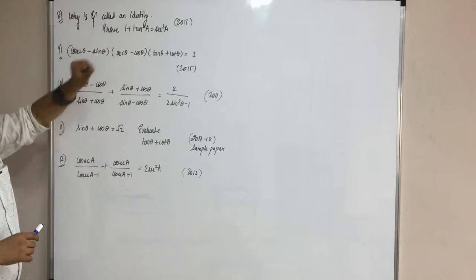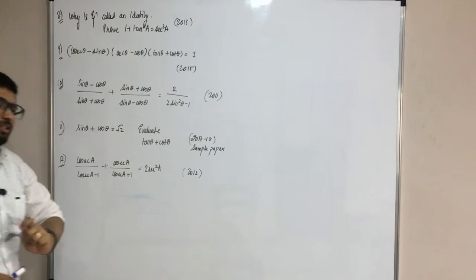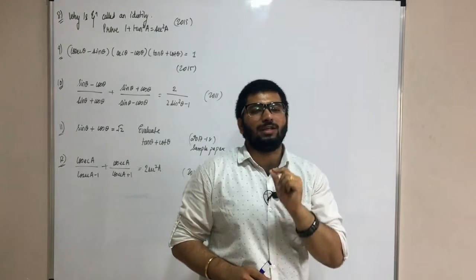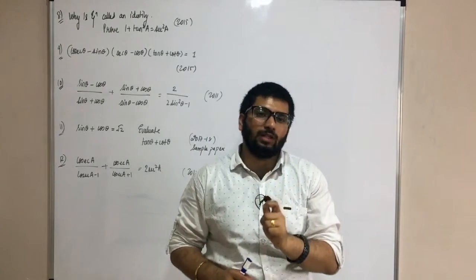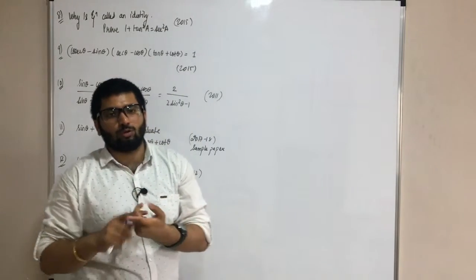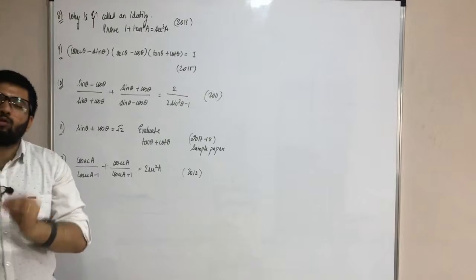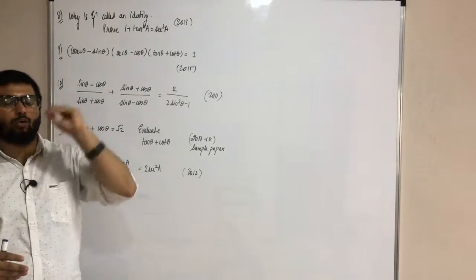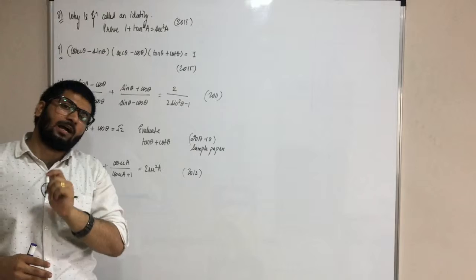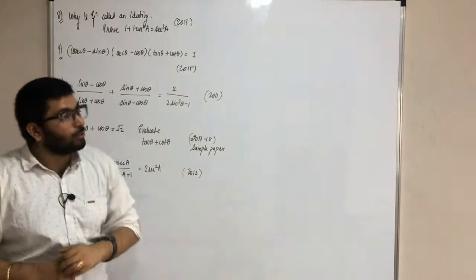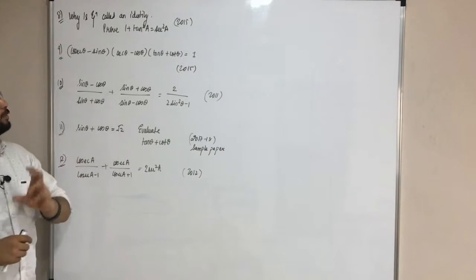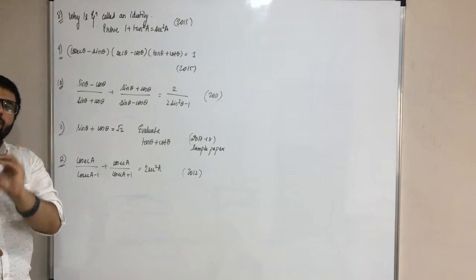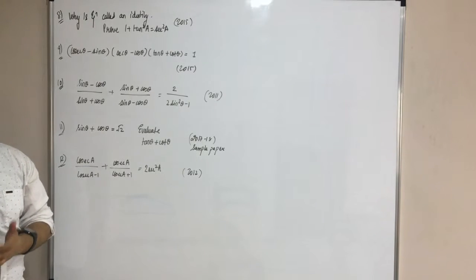Why is an equation called an identity? That is, if sine squared theta plus cos squared theta equals 1, it will be satisfied for any angle in the world. So why is an equation called an identity? Because it is valid for all the values of the variable, and it is always true.